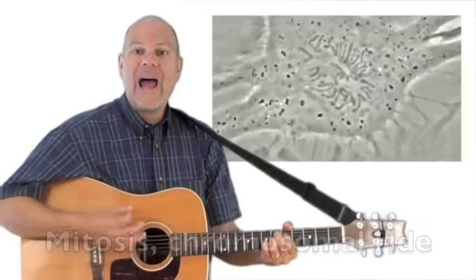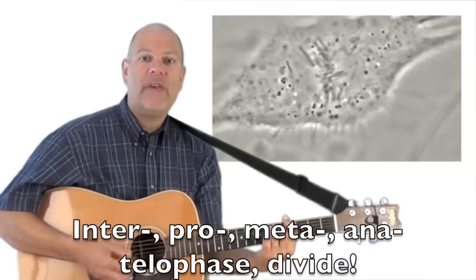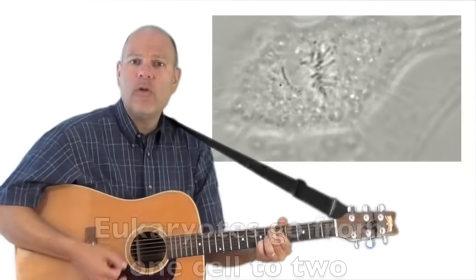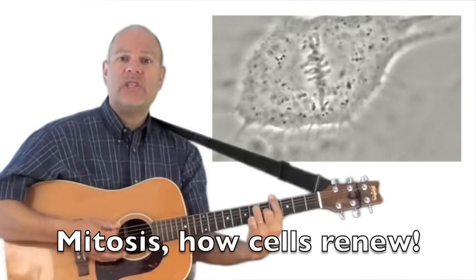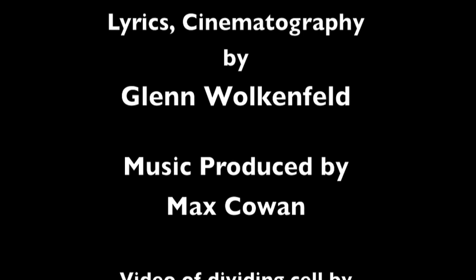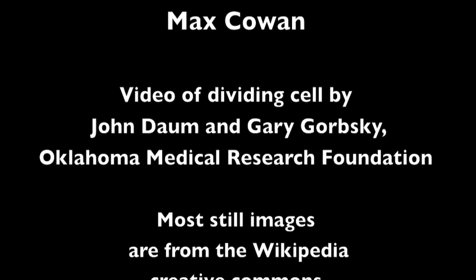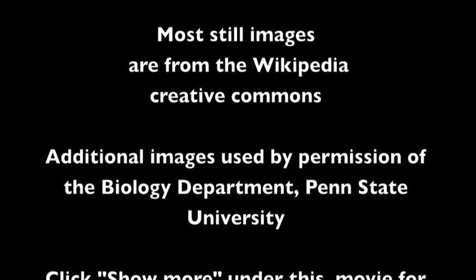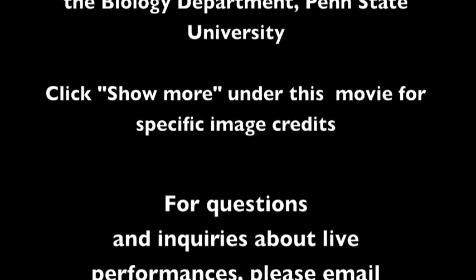Mitosis, a chromosome will ride in a chrome and in anaphase divide. Eukaryotes go from one cell to two. Mitosis, how cells renew. Mitosis, a chromosome will ride in a chrome and in anaphase divide. Eukaryotes go from one cell to two. Mitosis, how cells renew.